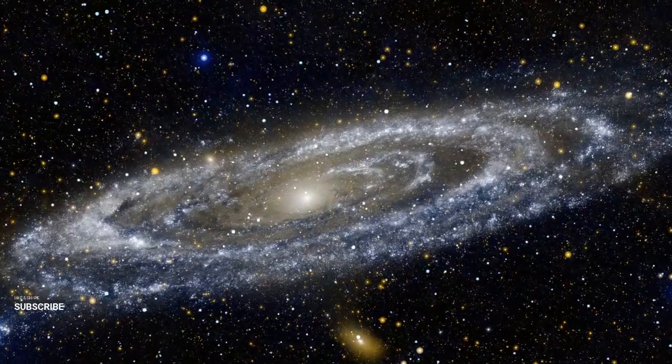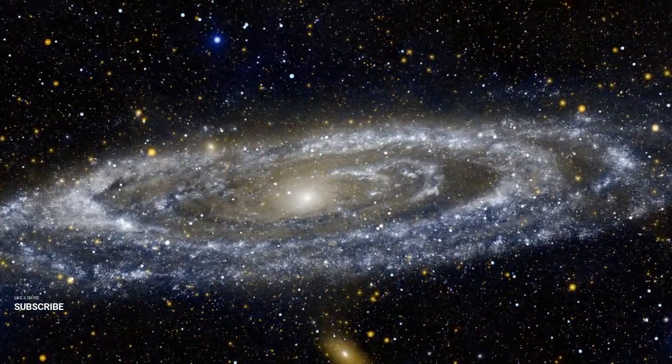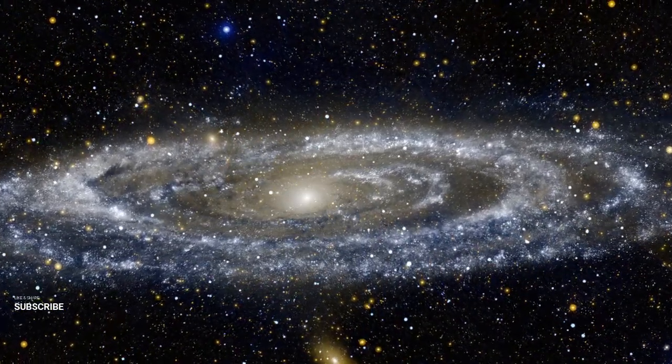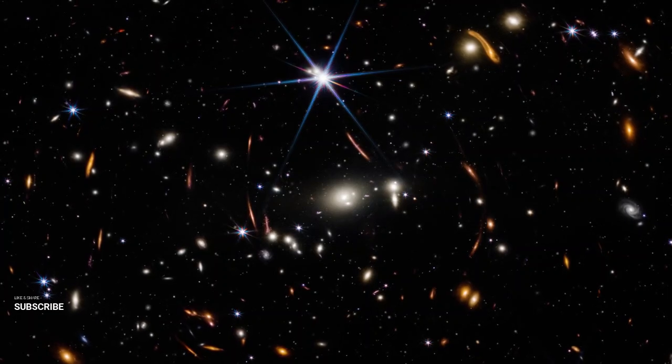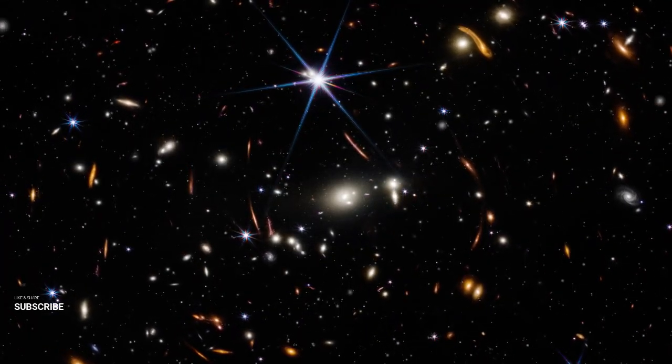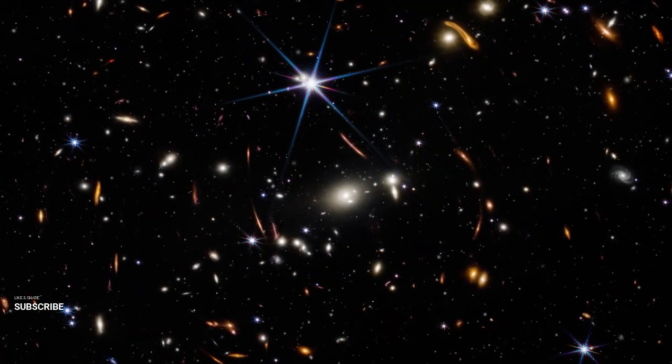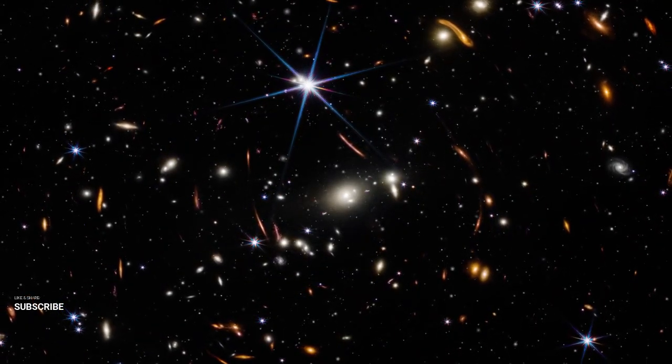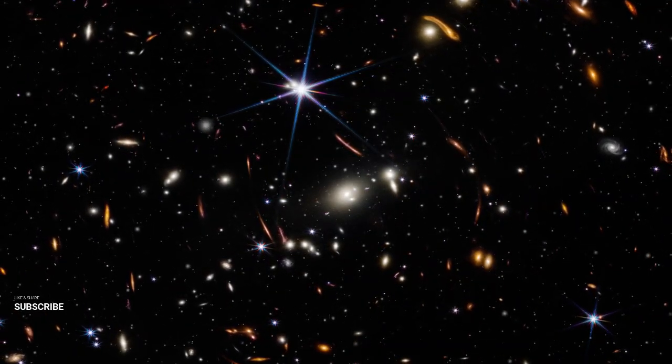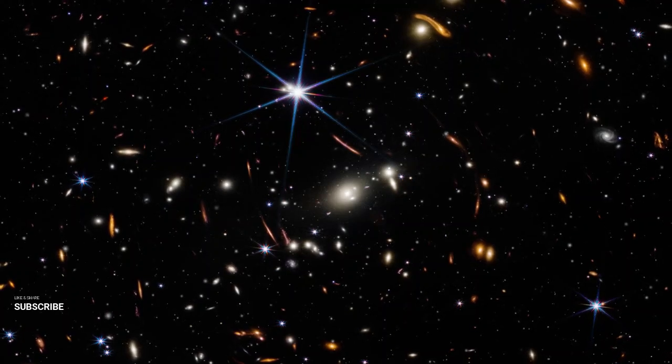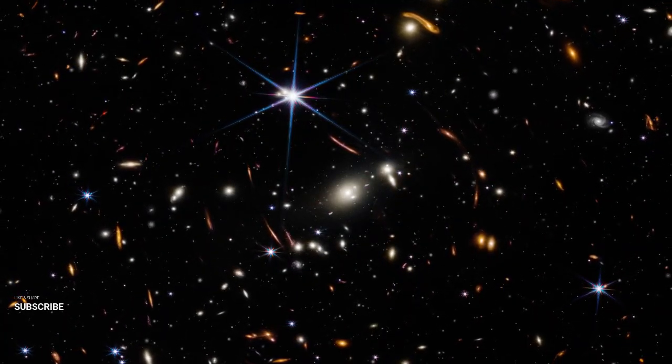For example, we don't know how often life begins or how frequently intelligent life develops technology. If, hypothetically, civilizations tend to last for billions of years, then it's more likely that more are still around today. Additionally, while terrestrial features like plate tectonics, oceans, and continents are generally necessary for life as we understand it, it's conceivable that unique ocean-dwelling technological civilizations could evolve without ever setting foot on land, representing exceptional deviations from the norm.